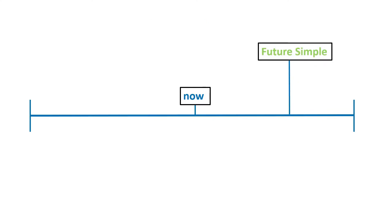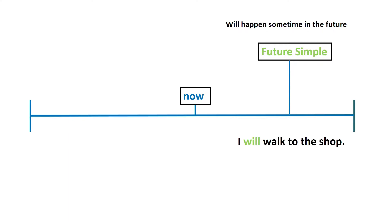Future simple. This is something that will happen sometime in the future, as you can see on the timeline. I will walk to the shop. Will is future simple.